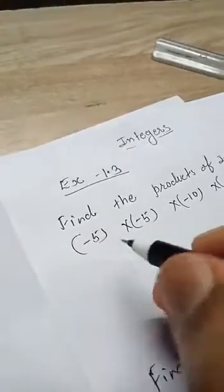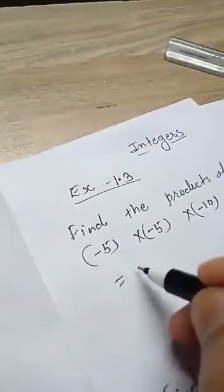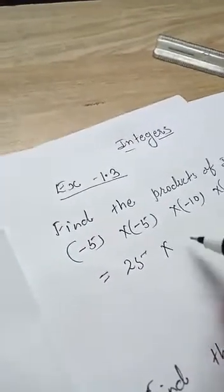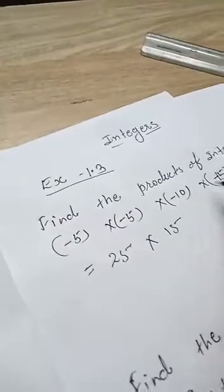Then after, minus 5 multiply minus 5 is 25, multiply by 10 and 15. Same sign, so positive 150.